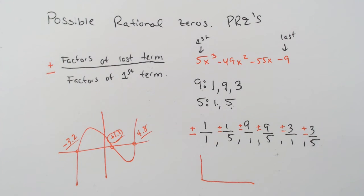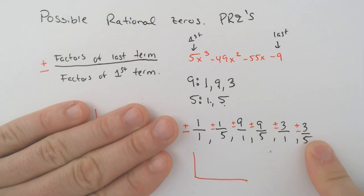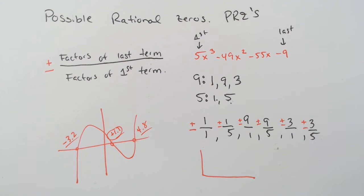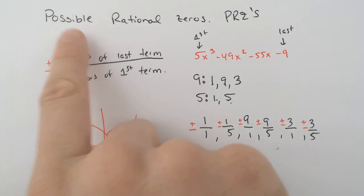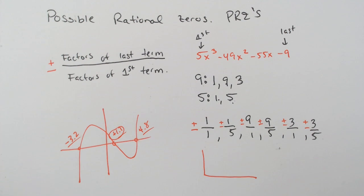It's close to that, and that would be the benefit of it. If you had a graph and all three zeros — or even just one zero that was a decimal — then you need your PRZs. Otherwise, if you don't have a graph, that's all you've got to go with. You just start guessing and checking until you find the actual zeros, which is another video and is very time-consuming. So we have two different videos on finding the zeros. This is just the possible zeros — not the actual zeros, but the possible rational zeros you could get.